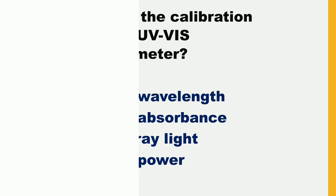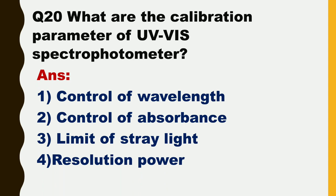The last question is: what are the calibration parameters of UV visible spectrophotometer? The following parameters are used to calibrate the spectrophotometer. These are: control of wavelength, control of absorbance, limit of stray light, and resolution power.